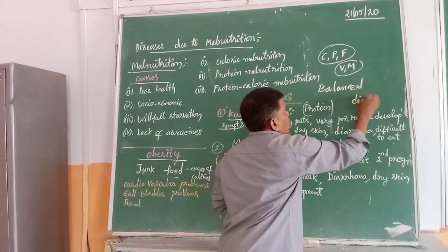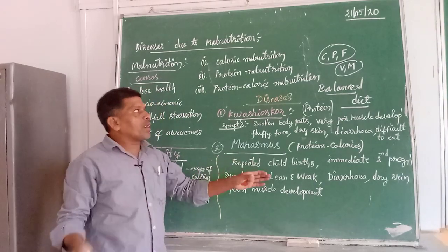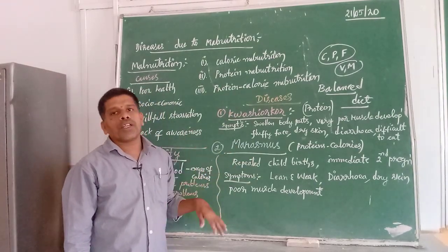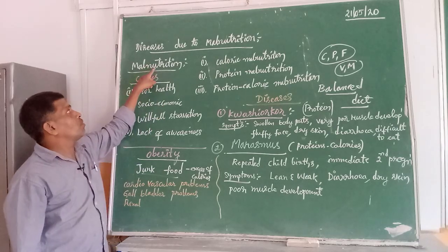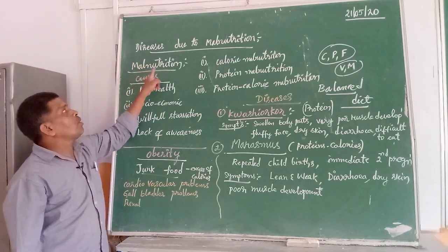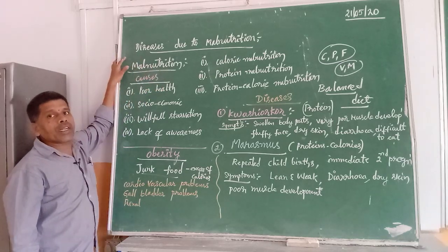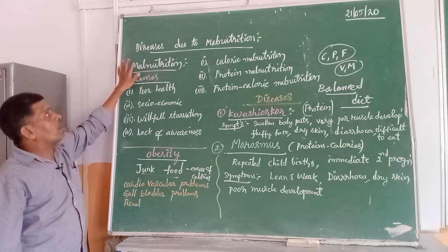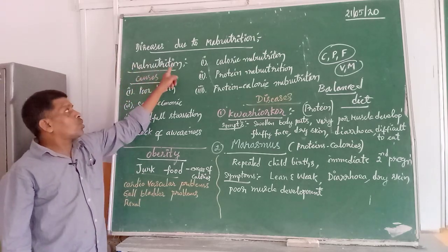Quite opposite to that, when a person takes food not containing proper nutrients — that can be any one of the nutrients — then such a type of diet leads to a problem called malnutrition. Eating food not containing one or more nutrients in our regular diet is called malnutrition.